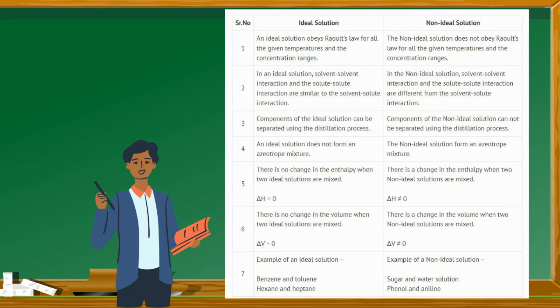Number 4: An ideal solution does not form an azeotrope mixture. The non-ideal solution forms an azeotrope mixture.